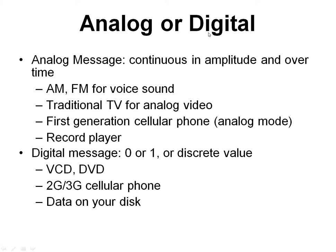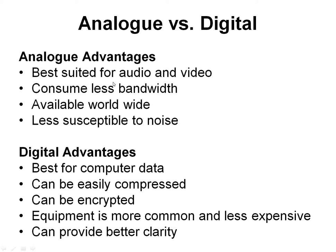Now coming to analog versus digital: as a recap, analog signals are continuous in amplitude and over time. Examples include AM and FM for voice recording, traditional TV using analog video, first generation cell phones, and record players. For digital: VCD, DVD, 2G, 3G cellular phones, and data on your disk. There are advantages and disadvantages of analog versus digital which have been described.